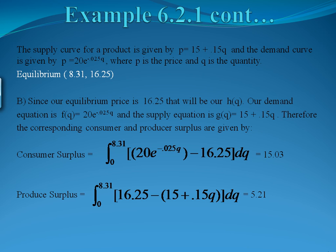Our producer surplus will integrate from 0 to the equilibrium quantity of 8.31. It will be our equilibrium price of 16.25 minus our supply function, which was 15 plus 0.15q. If you're subtracting off more than one term, you need to use parentheses. Putting this all into our calculator gives us a final producer surplus of 5.21.